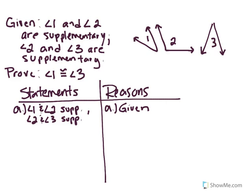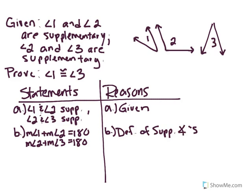What I'm going to do next is build off of my knowledge of what supplementary means. Supplementary just means that those two angles add up to 180 degrees. So I'm going to make each of these into their own equations. Angle 1 plus angle 2 equals 180, and angle 2 plus angle 3 equals 180. What would my reason be for this? Well, what did I build off of? I build off of my knowledge of what supplementary means. So this is going to be the definition of supplementary angles.